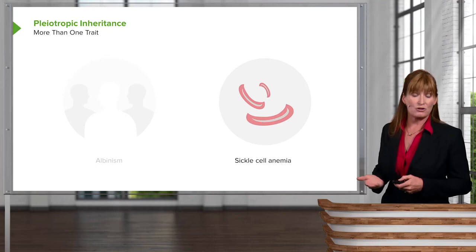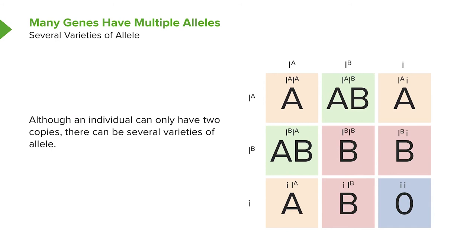Another situation involves multiple alleles. Recall Mendel chose traits that had duality — just two different alleles. In ABO blood typing, there are three potential alleles: A, B, and O. Each individual may only have two alleles, but in the population there are three. Some people are blood type A, some AB, some B, and some O, all depending on which two alleles they inherit. This is an example of multiple alleles in a population.